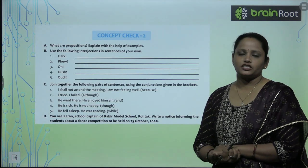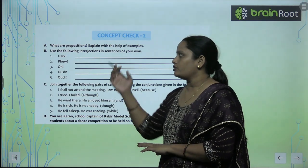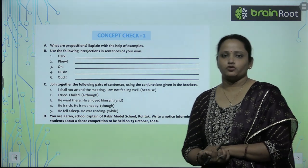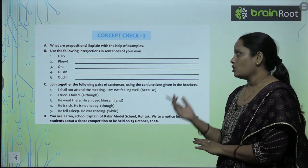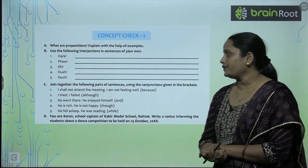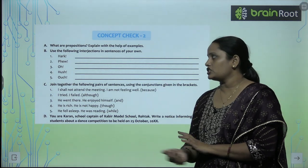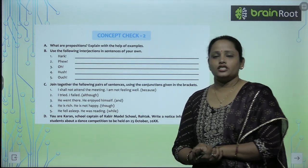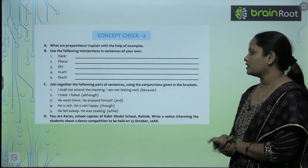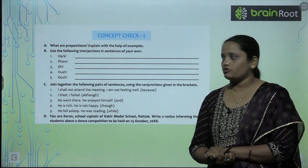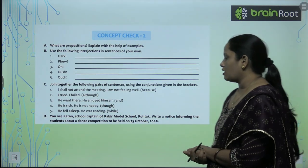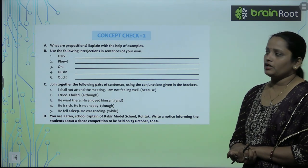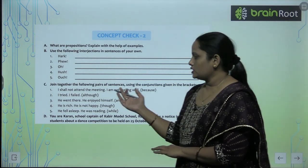Here is Concept Check number 2. The first question asks: what are prepositions? Prepositions are position words that tell us about the position and the movement of the noun. The next question asks you to use the following interjections in sentences of your own. Then join the following pairs of sentences using the conjunction given in the bracket. For example: 'I shall not attend the meeting. I am not feeling well.' (because) becomes 'I shall not attend the meeting because I am not feeling well.' Join the other sentences similarly.